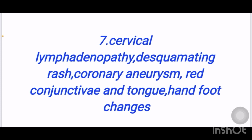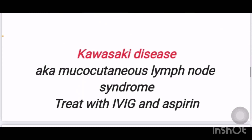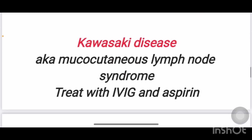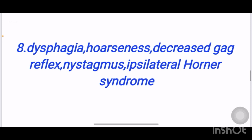Next scenario: a boy presented with cervical lymphadenopathy, desquamating rash, coronary aneurysm, red conjunctiva and tongue, and hand-foot changes. The diagnosis is Kawasaki disease, also known as mucocutaneous lymph node syndrome. Treatment is IVIG and aspirin.